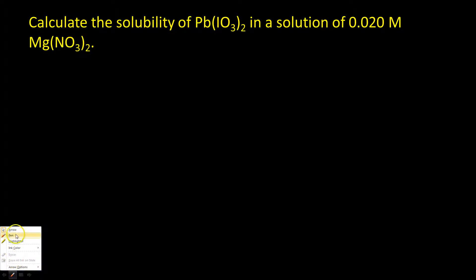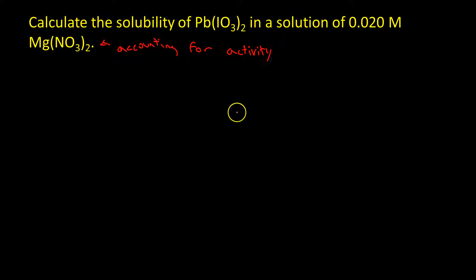Okay, so I'm going to go through this - question number 5 from our problem set on chapters 6 and 7. This one dealt with calculating the solubility of lead iodate in a solution of 0.02 molar magnesium nitrate. In this case, we're accounting for activity here.